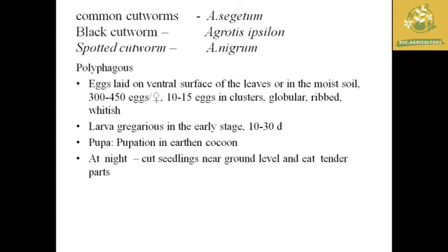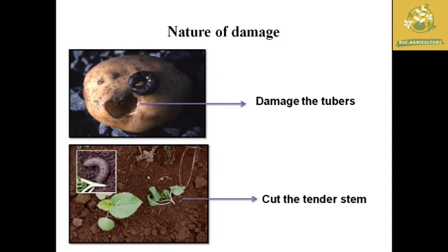The next pest is cutworms, which are polyphagous in nature. They have an egg-laying capacity of around 300 to 450 eggs per female, laying 10 to 15 eggs in clusters. Eggs are whitish. The larvae are gregarious in early stages and have a life period of around 10 to 30 days. Pupation occurs in an earthen cocoon. They majorly attack plants at night, cutting seedlings near the ground level and eating tender parts of the plant.